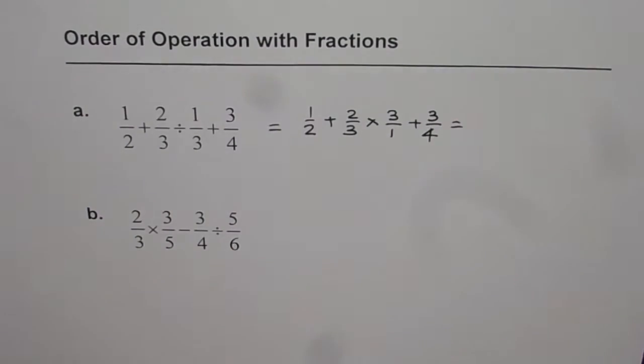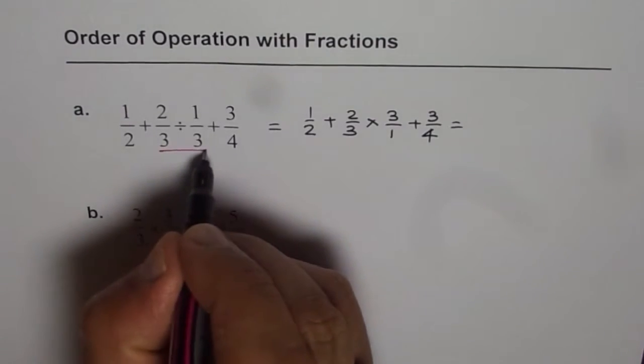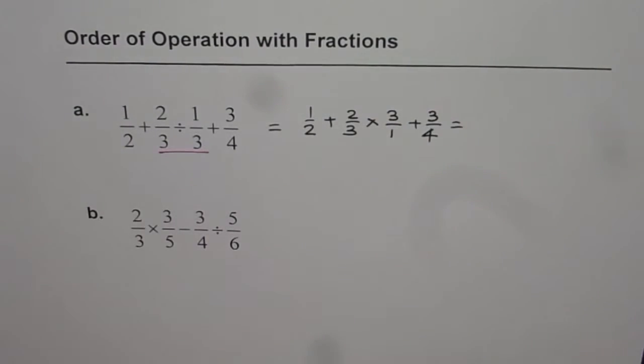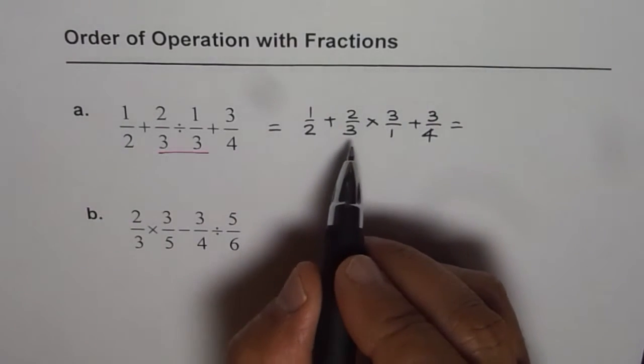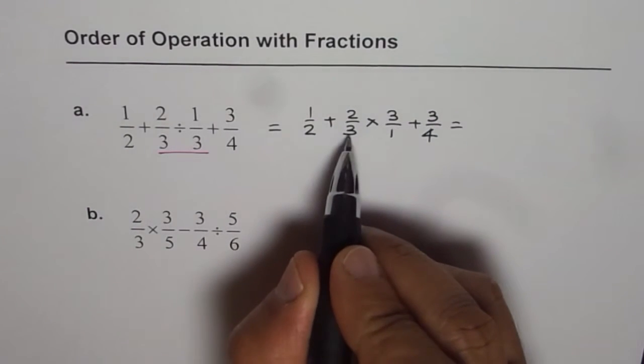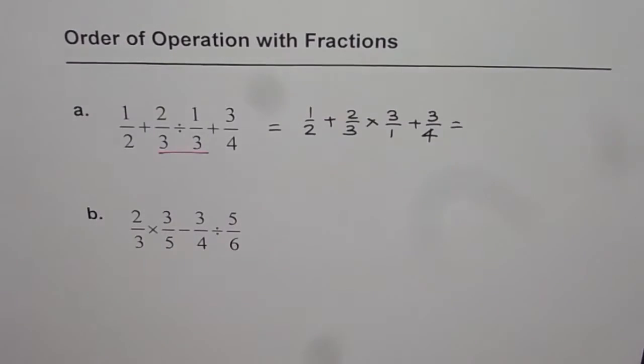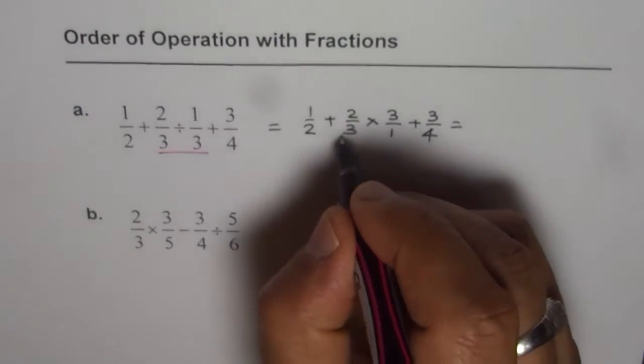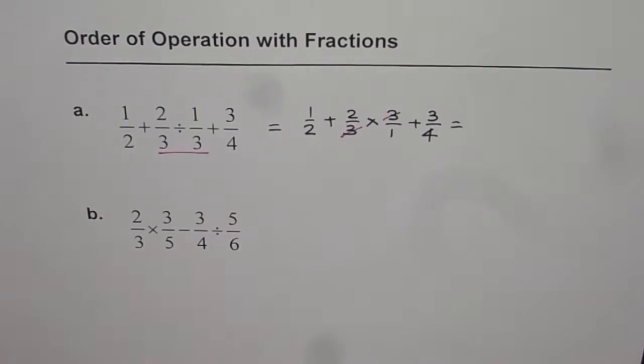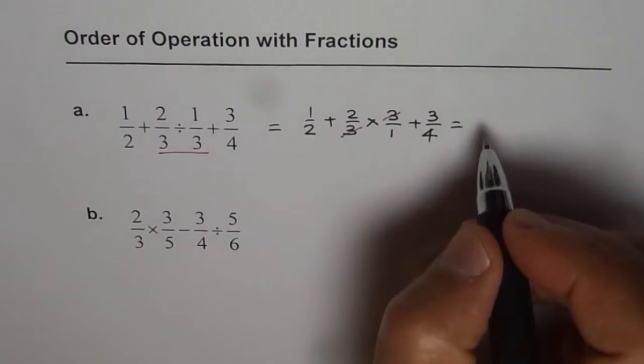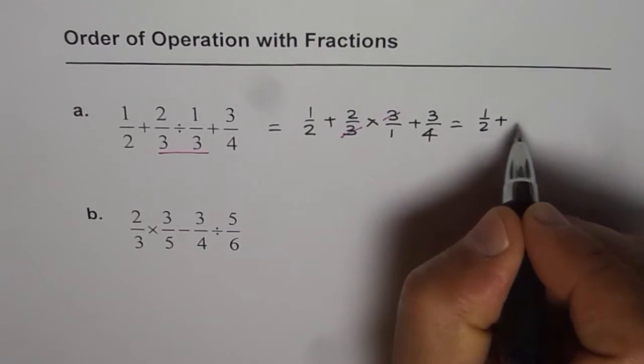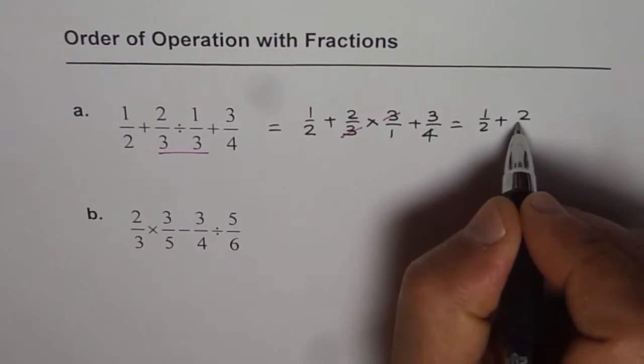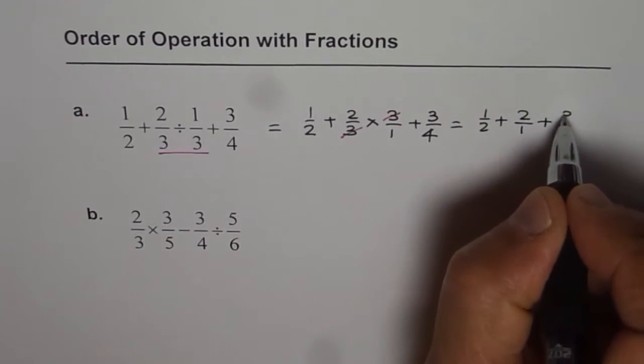So in the first step, we wrote division as multiplication and perform the division operation first. Two times three divided by three is number two or you can say three divided by three is one. So we are left with two.